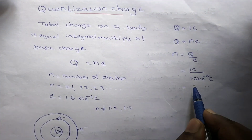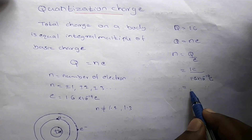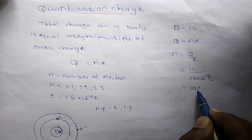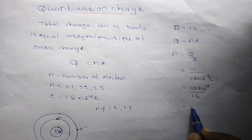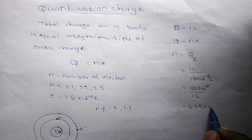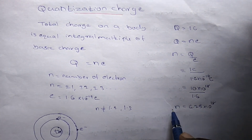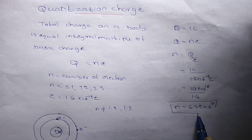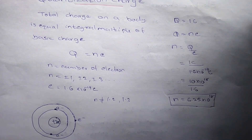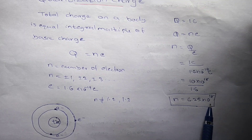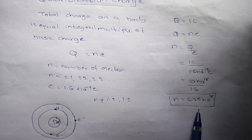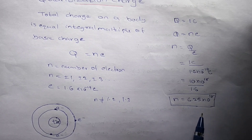The Coulombs cancel, and 10 power minus 19 moves to the top to become 10 power plus 18. This can be written as 10 into 10 power 18 divided by 1.6. Ten divided by 1.6 gives 6.25, so n equals 6.25 into 10 power 18 electrons. So if a body wants to gain minus 1 Coulomb, it must gain 6.25 into 10 power 18 electrons. If a body wants to gain plus 1 Coulomb, it must lose 6.25 into 10 power 18 electrons.